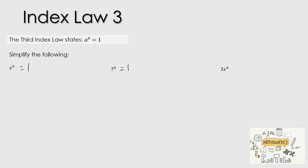Now let's move on to the third one: 3x to the power of 0. It's really important that you can identify what that 0 belongs to. That 0 power, or the Index, belongs to the x. So x is the base, and 0 is the Index or the Exponent or the Power. The 3 is what's called a Coefficient. So if we rewrite 3x to the power of 0, it looks like 3 multiplied by x to the power of 0. The 0 only belongs to the x — it does not belong to the 3. Since anything to the power of 0 equals 1, we have 3 times 1, which equals 3.